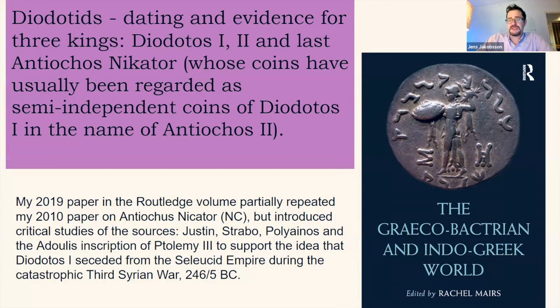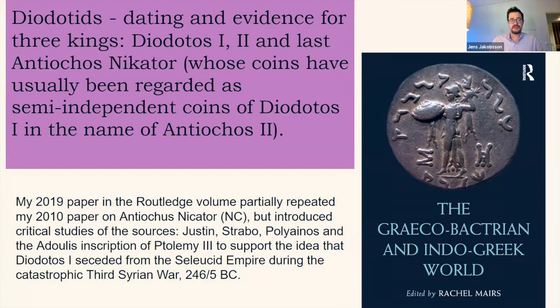It was at that time, as I see it, that Diodotus may have seceded — quite quickly. The established idea has always been that the coins issued under the name of Antiochus in Bactria, with the typical Diodatid thunderbolt, belonged to a semi-independent period. Both the Adolis inscription and Polianus say that when this war began, the Seleucid empire bordered on India, which I interpret to mean that Bactria was in the Seleucid empire before the war.